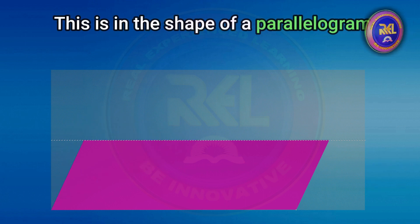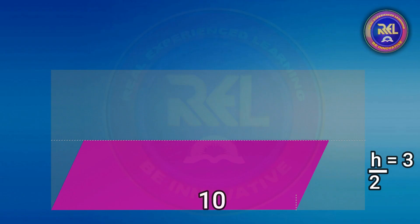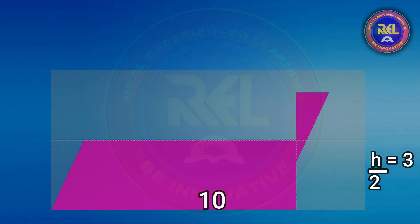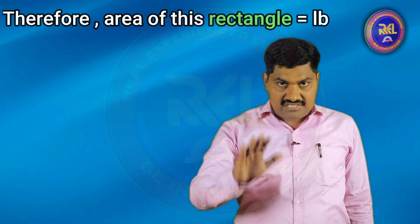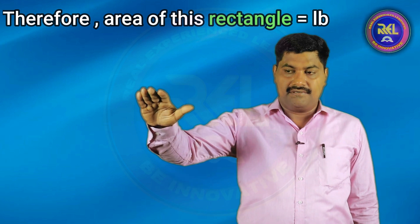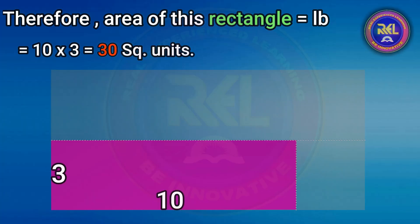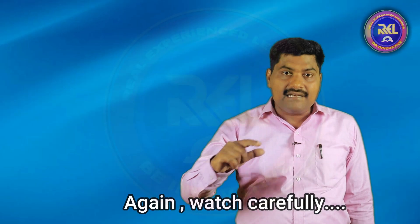This is in the shape of a parallelogram. Finally, this is a rectangle with length 10 units and breadth 3 units. Therefore, area of this rectangle equal to L B, equal to 10 into 3, equal to 30 square units.